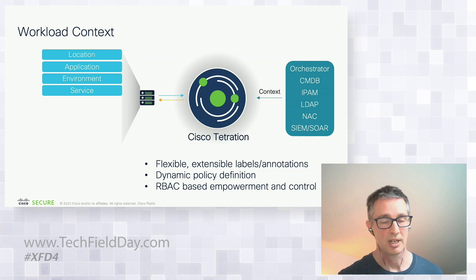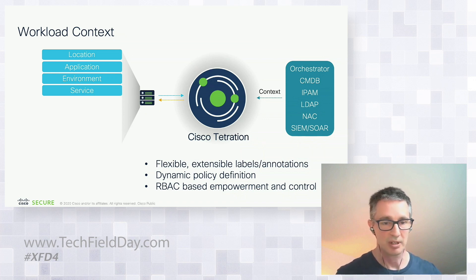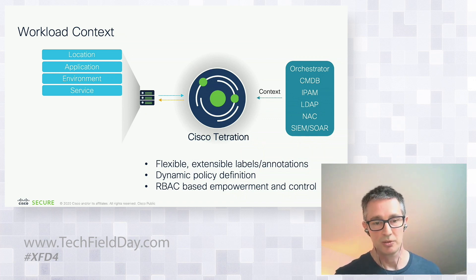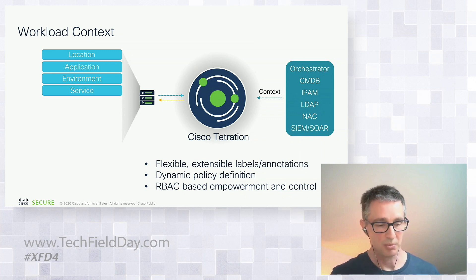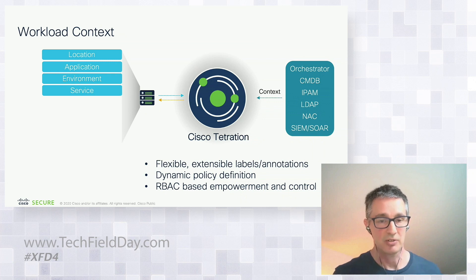Building on that, where we have confidence in the data, we can define the application, the environment, or lifecycle — these are more application-specific capabilities. Here is where I might also want to let Tetration help me discover some of these pieces. If I don't know, for instance, what tier or role a given set of workloads are running inside an application environment, I can let Tetration suggest and make suggestions that I can agree with, validate, and then lock in.